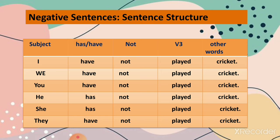The next type of sentence is negative sentence. The sentence structure for negative sentences is: subject plus has/have plus not plus verb third form plus other words. We just add 'not' in the sentence structure for affirmative sentences after has/have, and all the other rules remain the same — 'has' for singular nouns and 'have' for plural nouns. Examples: I have not played cricket. We have not played cricket. You have not played cricket. He or she has not played cricket. They have not played cricket.